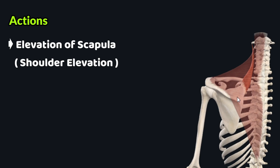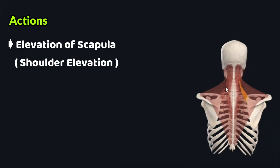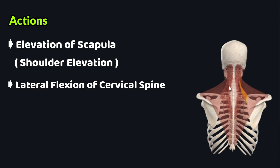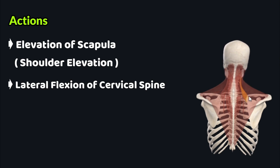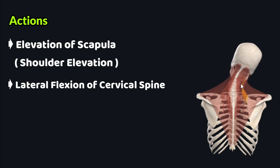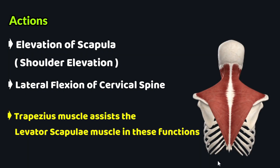The actions of the levator scapulae are understood through its origin and insertion points. An important action is elevation of the scapula, also known as shoulder elevation — the muscle acts through its insertion on the medial border of the scapula. When the insertion is fixed and the muscle acts through its origin on the cervical spine, it performs lateral flexion of the cervical spine. The trapezius mainly assists the levator scapulae in both of these functions.